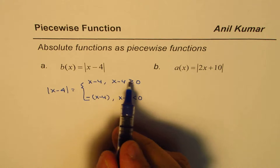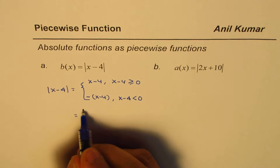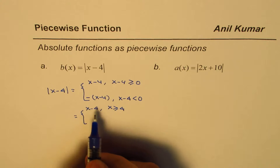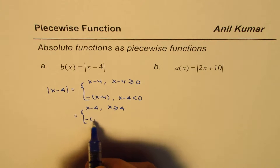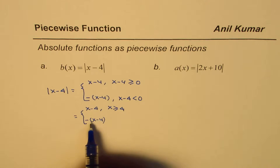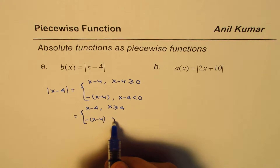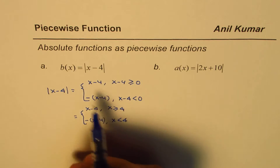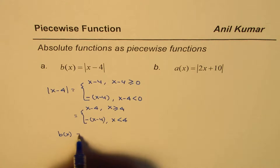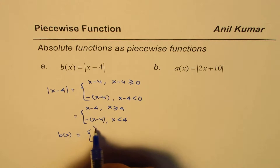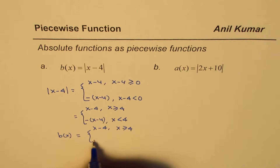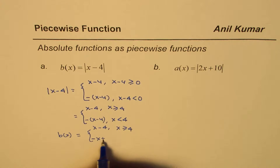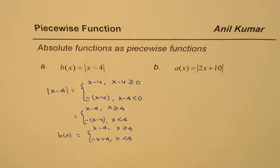We can solve this inequality and rewrite b(x) as a piecewise function: x minus 4, if x is greater than or equal to 4; or negative of (x minus 4), which is minus x plus 4, if x is less than 4. I prefer to keep the negative form as written — it reminds us that negative of a negative is positive, giving a positive value.